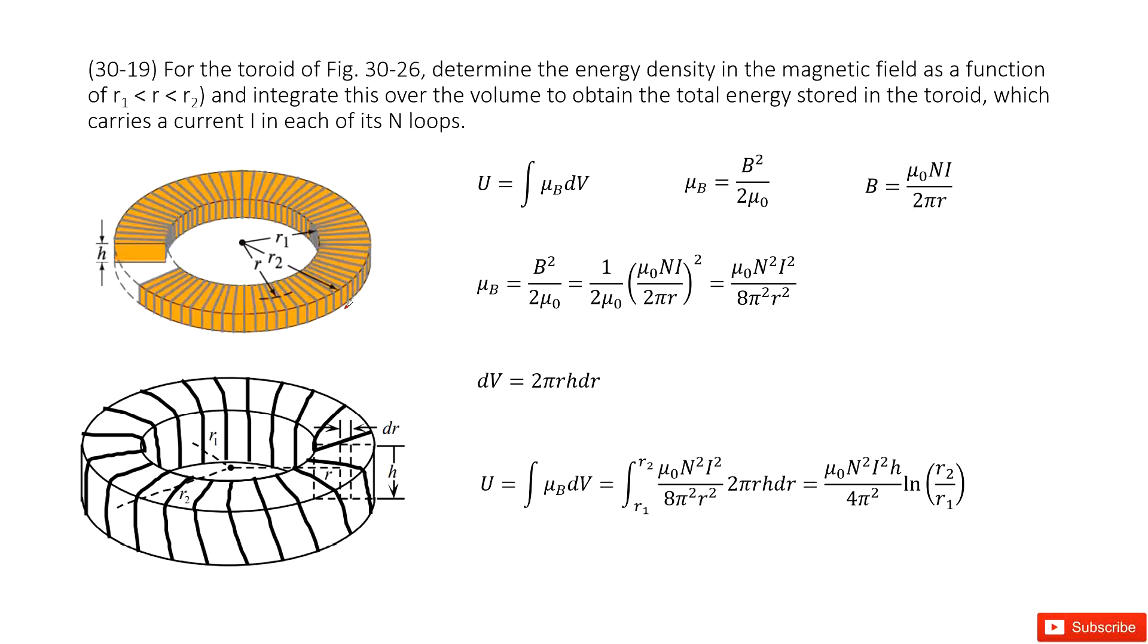Chapter 30 is about inductance, electromagnetic oscillations and AC circuits. We look at this system, torus. We need to find the energy density in magnetic field as a function of the distance r, and then integrate this over the volumes to get the total energy stored in this toroid.